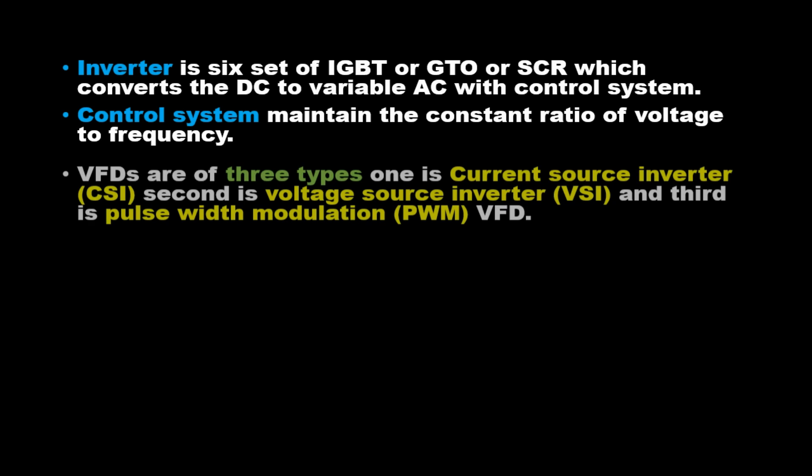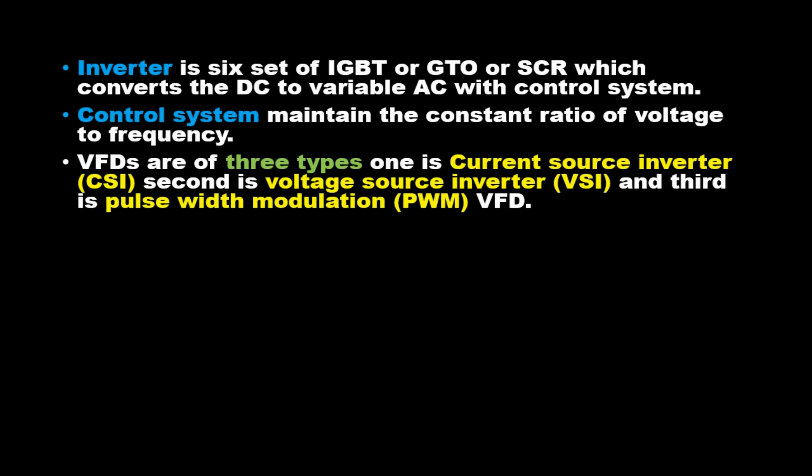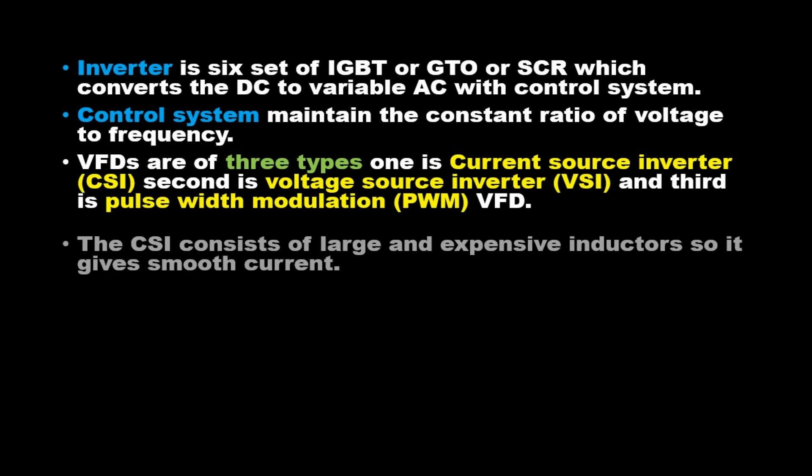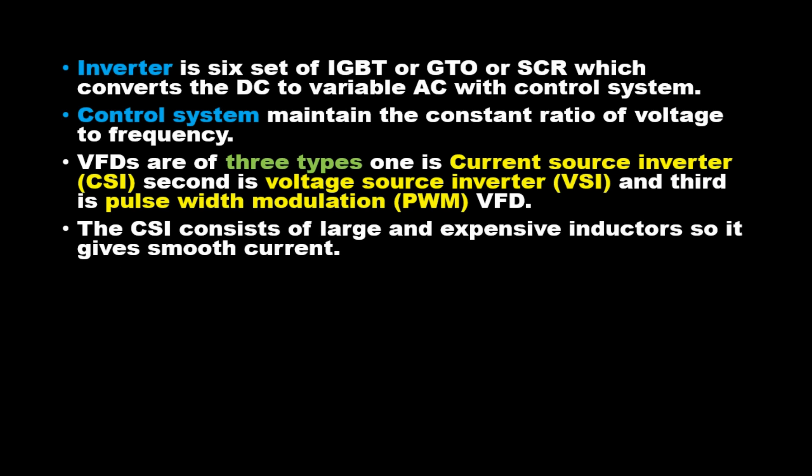VFDs are of three types. One is current source inverter (CSI), second is voltage source inverter (VSI), and third is pulse width modulation (PWM) VFD. The CSI consists of large and expensive inductors so it gives smooth current. VSI VFD has poor power factor.